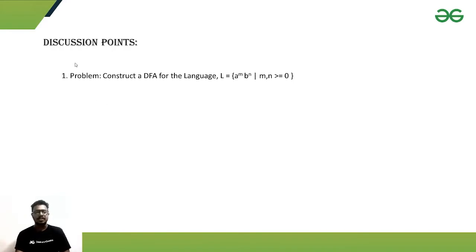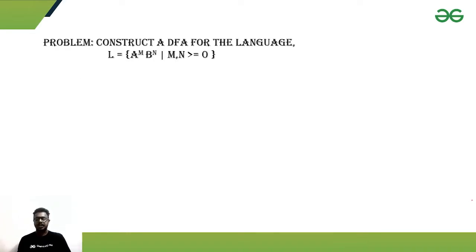So, the problem is this: a point of discussion is that we need to construct a DFA for the language where a to the power m, b to the power n, where m and n can be greater than equal to 0. The problem statement looks like this and let's start constructing the DFA.